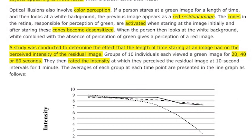Figure 2 shows the intensity of the residual image over 60 seconds based on exposure time to the original image. There are three lines: a dotted line for 20 seconds, a dashed line for 60 seconds, and a solid black line for 40 seconds. On the x-axis we have length of exposure at 10-second intervals up to 60 seconds, and on the y-axis intensity on a scale of 1 to 10. We want to understand the legend and translate it into a story.